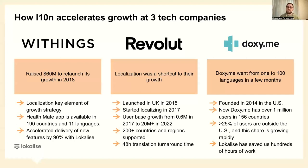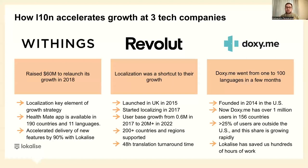Finally, Doximi went from one to 100 languages in just a few months. Founded in 2014 in the US, they now have more than one million users in 156 countries, with over 25% of users outside the US — and that share is growing rapidly. Thanks to a single source of truth platform, they saved hundreds of hours of work, brought everyone together, and scaled from one to 100 languages in just a few months. That's a remarkable result — if you do everything right, that's how quickly you can scale.